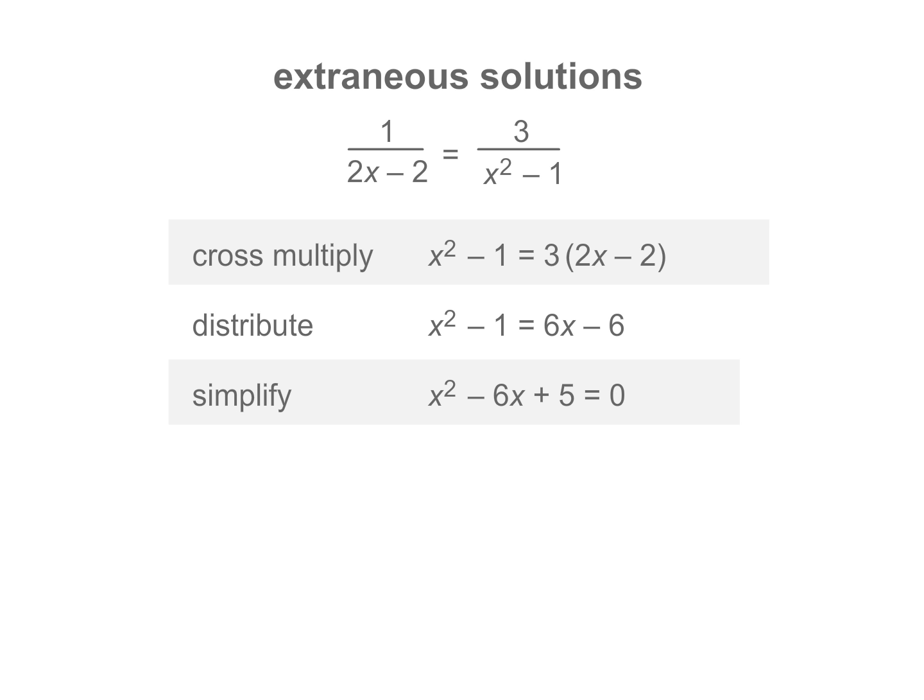Some algebraic procedures for solving rational equations result in extraneous solutions. After solving this rational equation, the solutions are x equals one or x equals five.